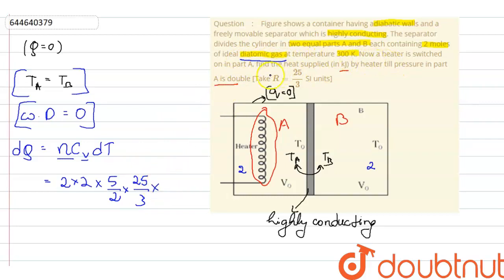It has been told a heater is switched on in part A. Find the heat supplied till the pressure in part A is double. Now, by this line till pressure in part A is doubled, we can conclude that pressure is proportional to temperature in ideal gas.